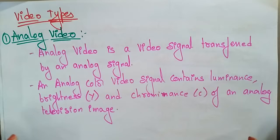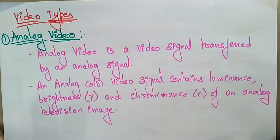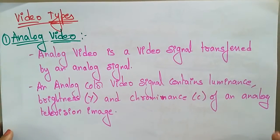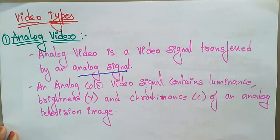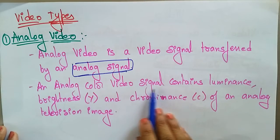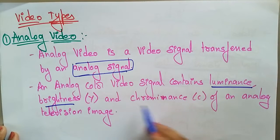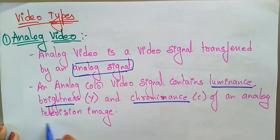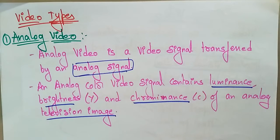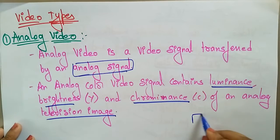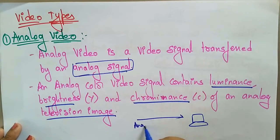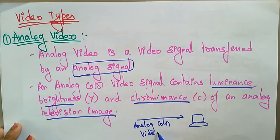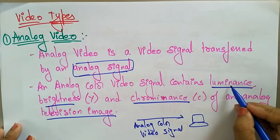What are the different types of video? Just like animation types, there are different video types. The first one is analog video. Analog video is a video signal transferred by an analog signal. An analog color video signal contains luminance — that is brightness — and chrominance. If you want to display a color video on an analog television, the analog color video signal has to be transmitted, and it contains luminance brightness and chrominance.